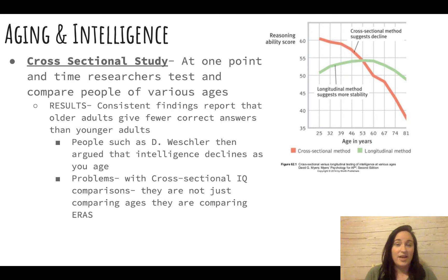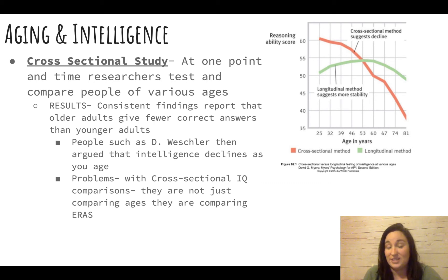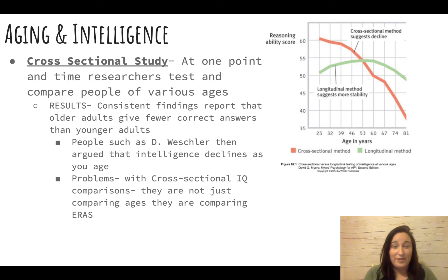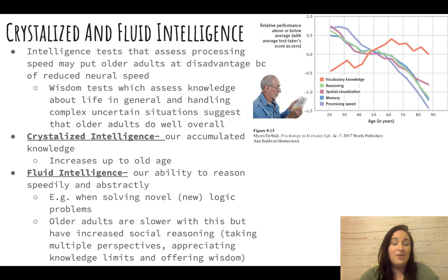Cross-sectional studies find that older adults give fewer correct answers than younger adults. However, this comparison is complicated because people who were 50, 60, or 70 years old received very different schooling in different decades. As we discussed with the Flynn effect, IQ scores seem to increase each decade, largely due to schooling and industrialization.